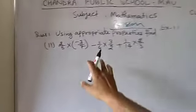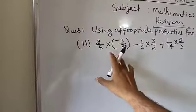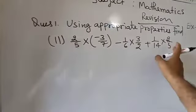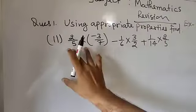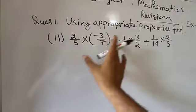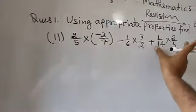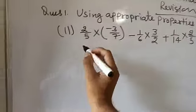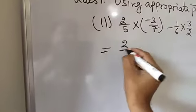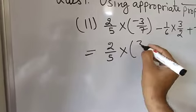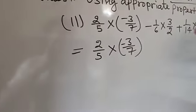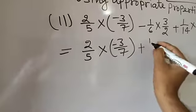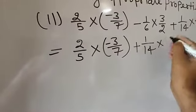I have written the second part of the question. If you are going to find the value of this, here you can see it is 2 by 5 here, and here it is also 2 by 5. So you can take 2 by 5 common in both — that is the multiplication of these two values and the multiplication of these two values. So these two you need to write together. It can be written like 2 by 5 into minus 3 by 7. That value, and if you are going to write it with this value, it can be written as 1 by 14 into 2 by 5.